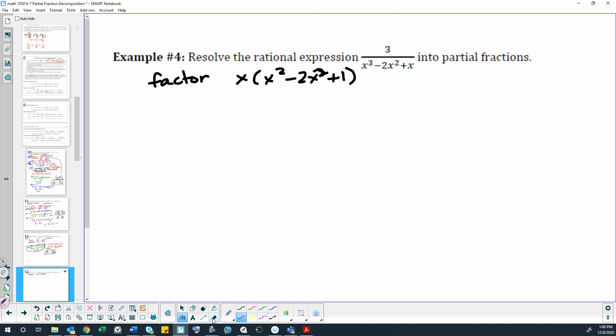No, that squared shouldn't be there. Maybe that's what my computer knew and that's why it glitched. So then we have x times x minus 1 times x minus 1.